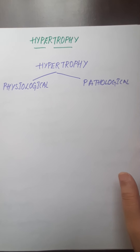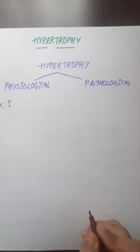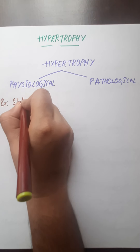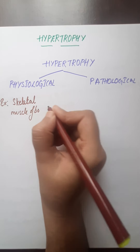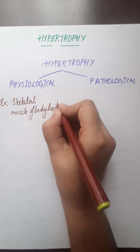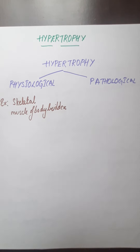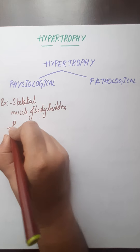For example, physiological hypertrophy is seen in the skeletal muscle of bodybuilders. The cells increase in size to adapt the increased workload — they will be increasing the workload, so to adapt that, the cells will be increasing in size.